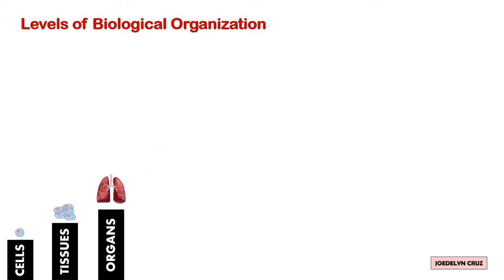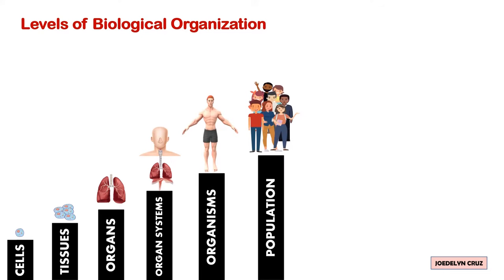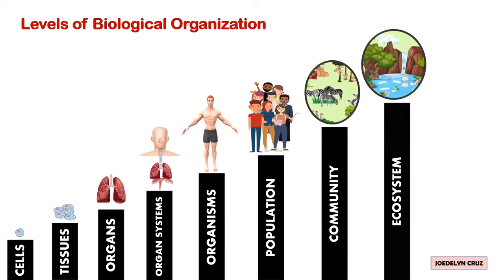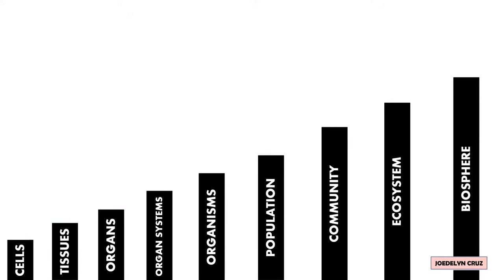Here are the levels of biological organization from the lowest to the highest level: Cells, Tissues, Organs, Organ Systems, Organisms, Population, Community, Ecosystem, and Biosphere. Let us first discuss the cell.